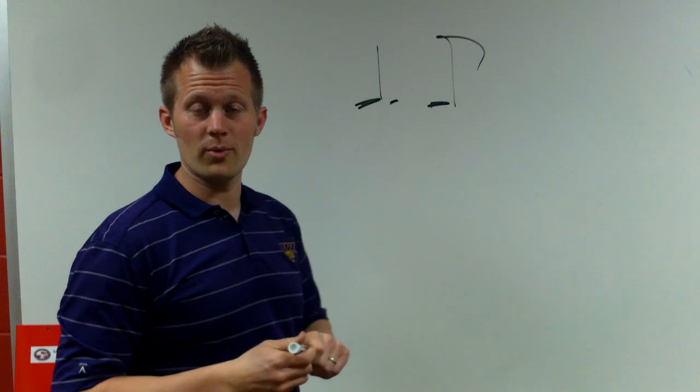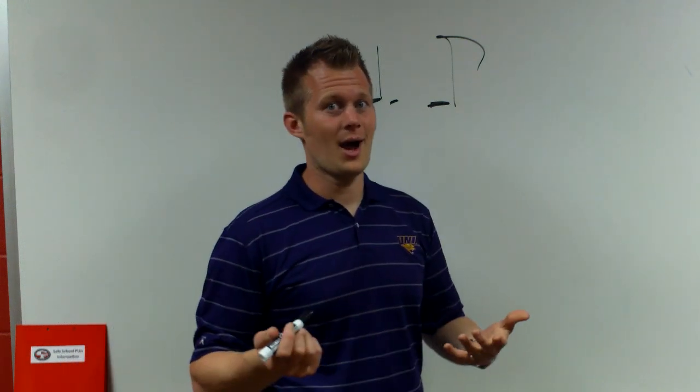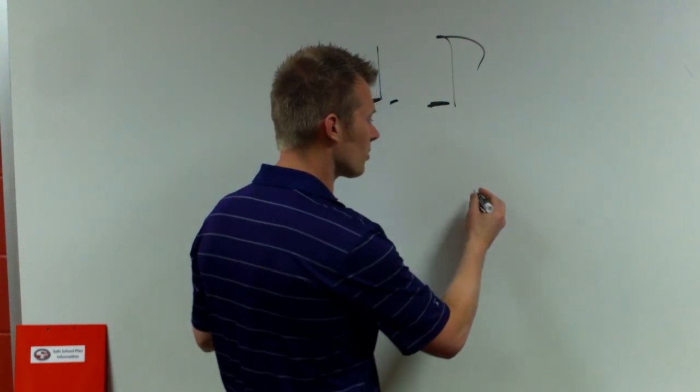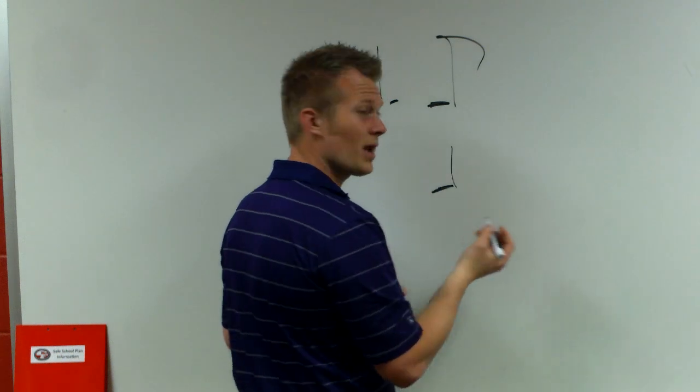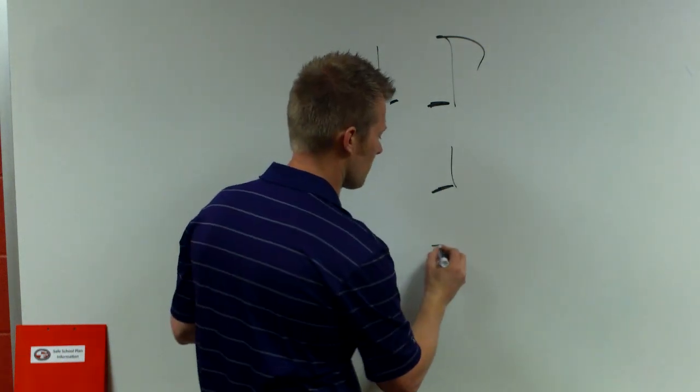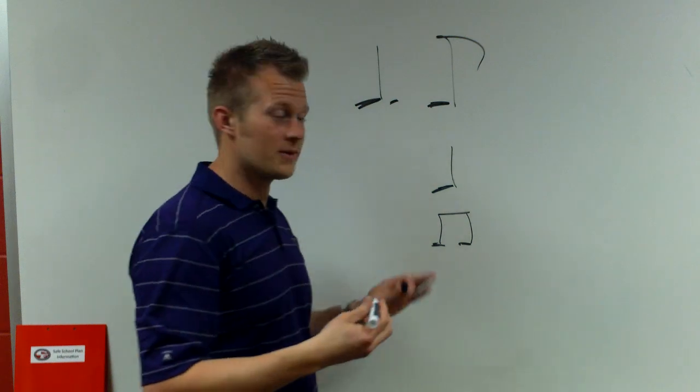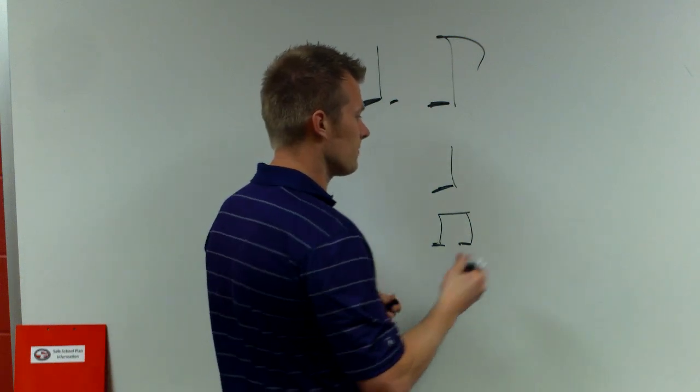So dotted quarter note eighth note rhythm. Let's look at first how we get that rhythm. So in a normal quarter note, we have two eighth notes, okay? And we would count that one and, right? That fits all in that same beat there.